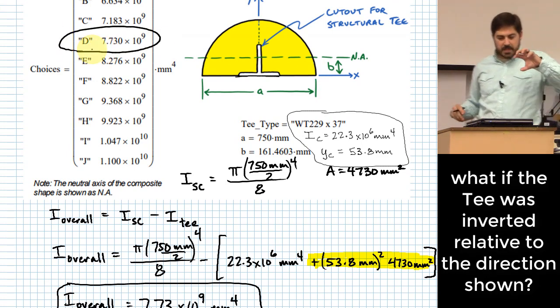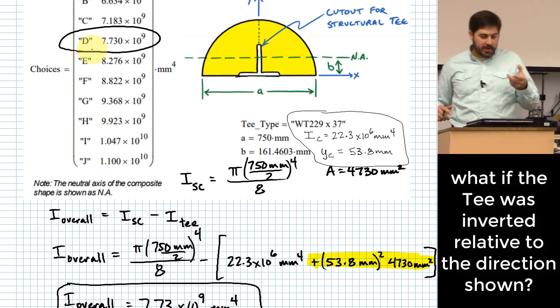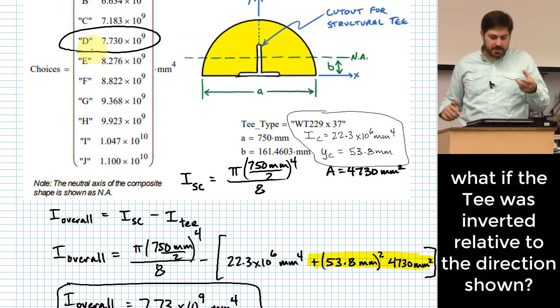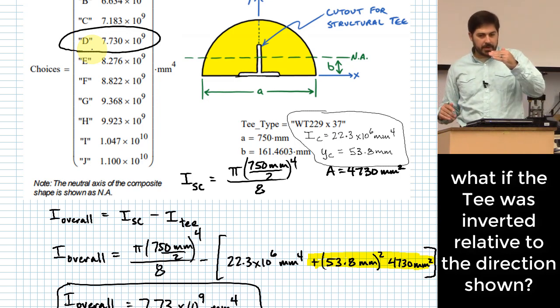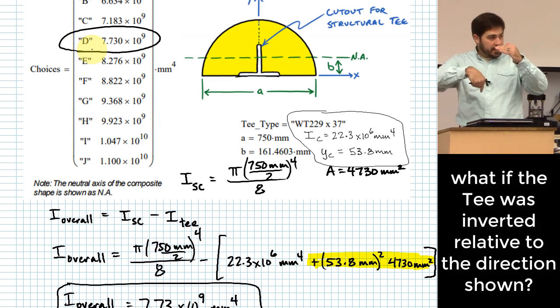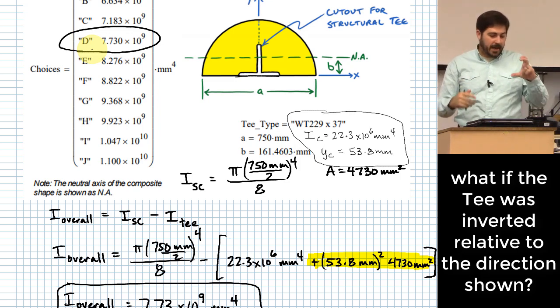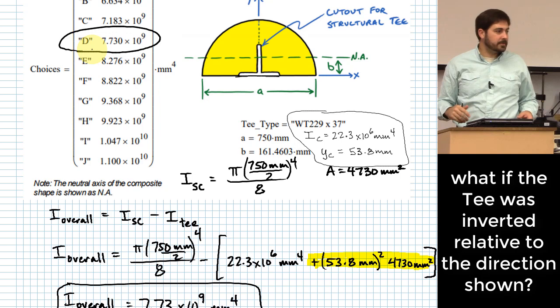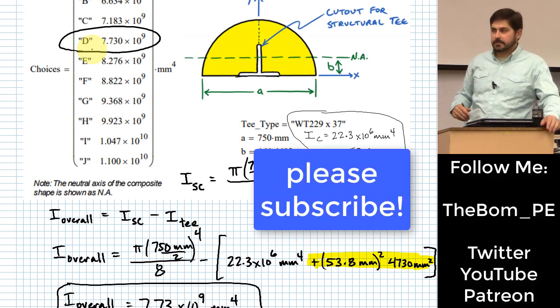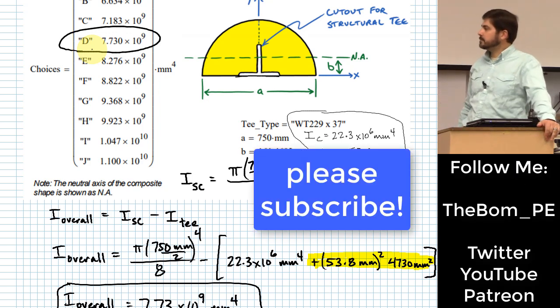So his question is if the t was upside down, what we would have to do is figure out what the distance was from the centroid of the t to the other end as opposed to the top end. So you would take the height of the t and subtract the y sub c and that would be your length that you would use if the t was flipped.